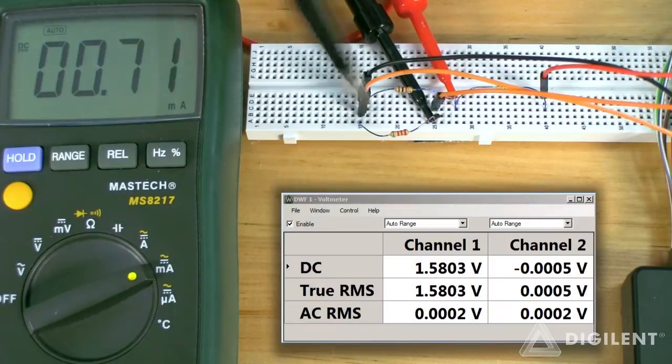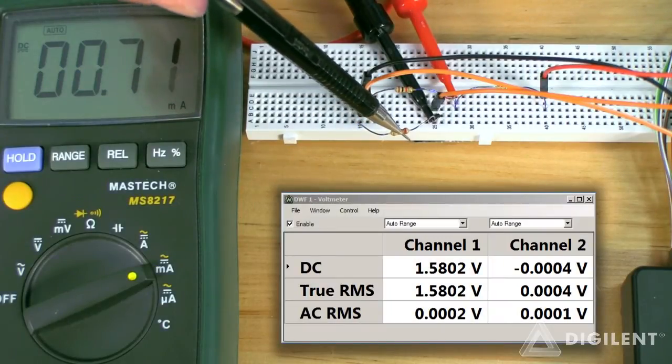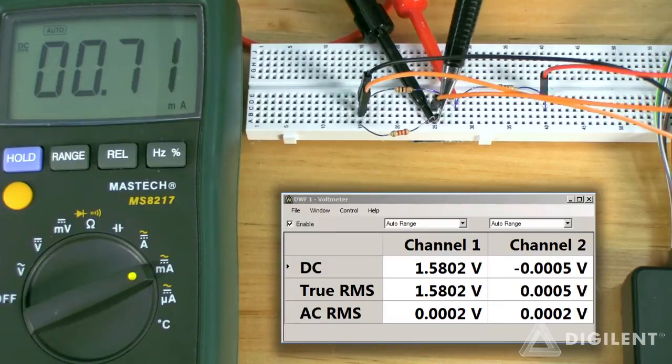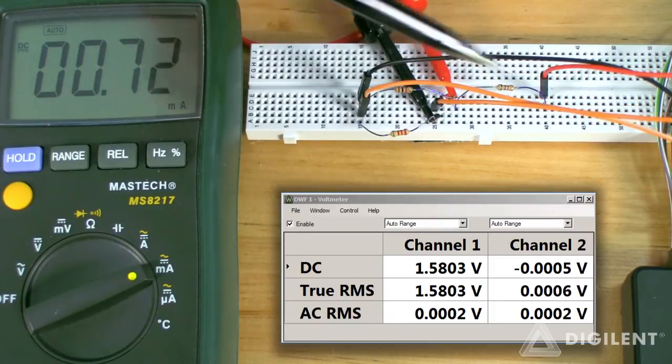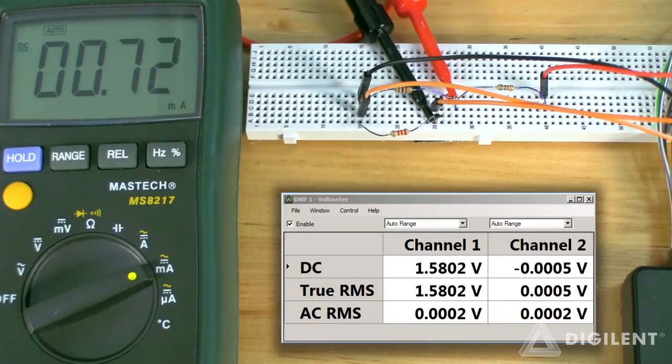Finally, to measure the voltage and the current across the 2.2 kiloohm resistor, I disconnect that resistor from this point, put the ammeter between this terminal and this terminal, and measure my voltage across this resistor. I get about 1.58 volts, and about 0.72 milliamps.